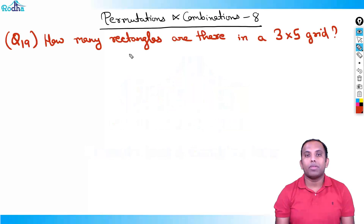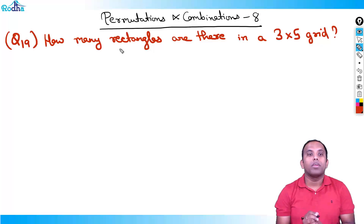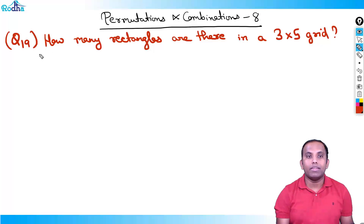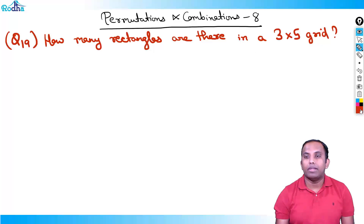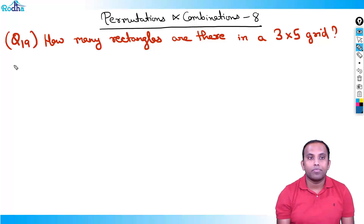Hi everyone, my name is Ravi Prakash and welcome to the 8th class of permutations and combinations. We are discussing a series of very good questions here. Question number 19: how many rectangles are there in a 3×5 grid?